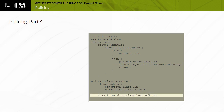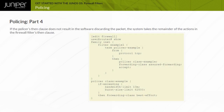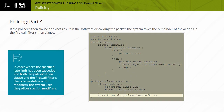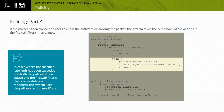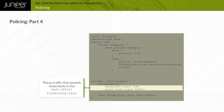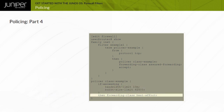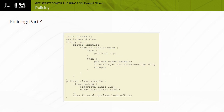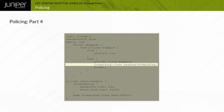If the packet does exceed the policer, the system takes the actions in the policer's then clause. If the policer's then clause does not result in discarding the packet, the system takes the remainder of the actions in the firewall filter's then clause. In cases where both the policer's and the filter's then clause define action modifiers, the system uses the policer's action modifiers. For example, this firewall filter polices all TCP traffic exceeding 10 Mbps with a 62,500 byte burst size, placing exceeding traffic in best effort and conforming traffic in assured forwarding.